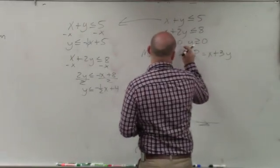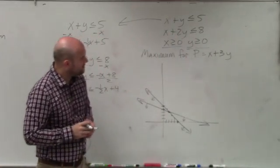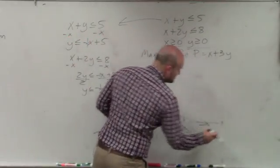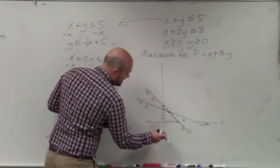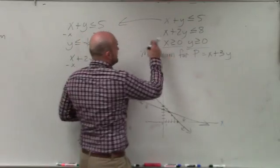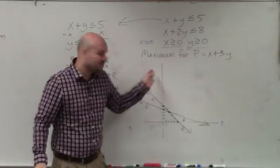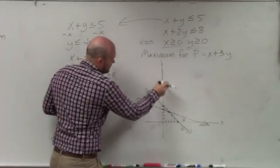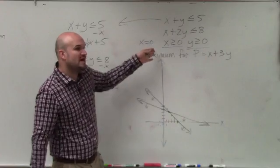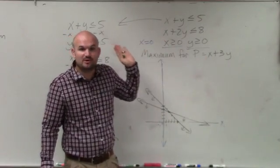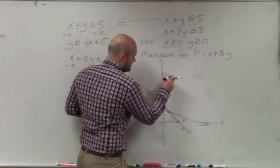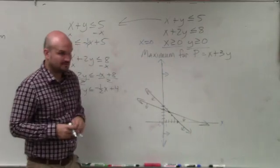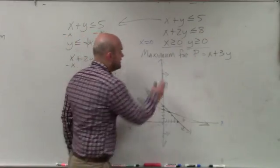A lot of students had trouble with x greater than or equal to 0 and y greater than or equal to 0. Remember, x equals 0 is the y-axis — that's a vertical line. Since x greater than or equal to 0, you shade to the right. Then y greater than or equal to 0 is a horizontal line along the x-axis, and since y is greater than 0, you shade going up.